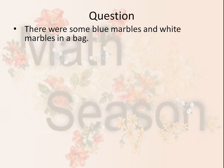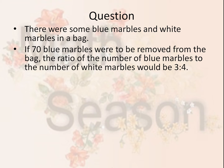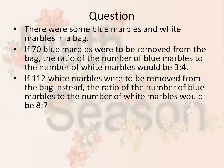There were some blue marbles and white marbles in a bag. If 70 blue marbles were to be removed from the bag, the ratio of the number of blue marbles to the number of white marbles would be 3 to 4. If 112 white marbles were to be removed from the bag instead, the ratio of the number of blue marbles to the number of white marbles would be 8 to 7.